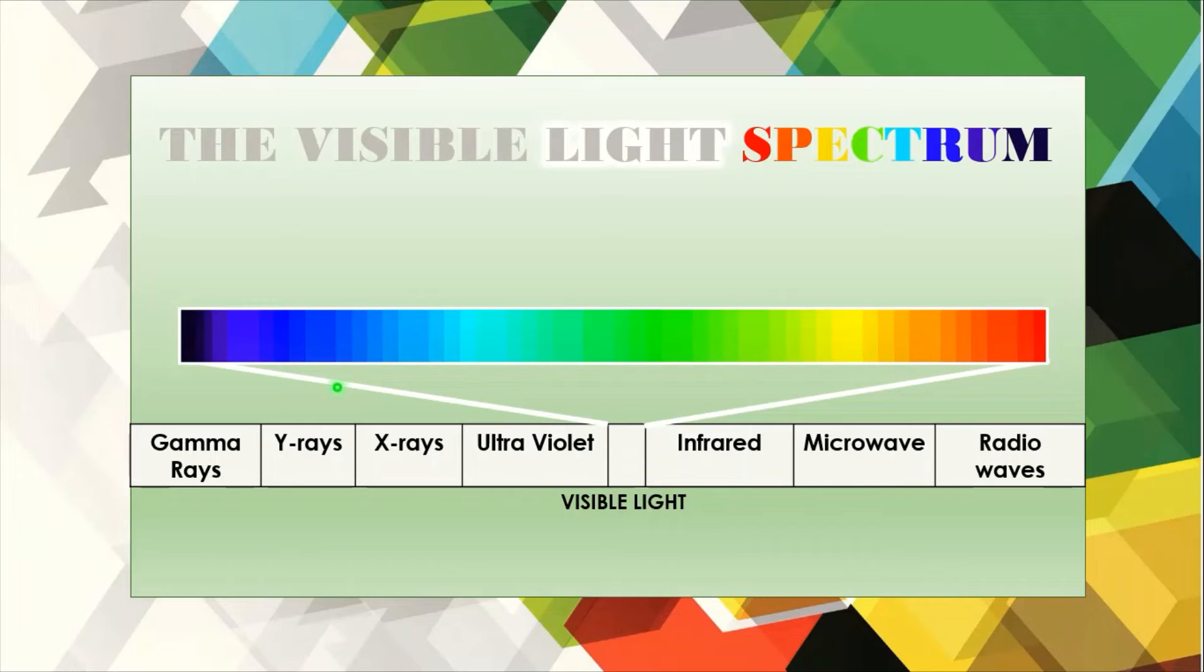Wavelength of light in visible light ranges from 400 to 420 nanometer for violet, 420 to 440 nanometer for blue, 490 to 570 nanometer for green, 570 to 585 nanometer for yellow, 585 to 620 nanometer for orange, and 620 to 780 nanometer for red.